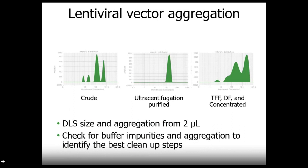Now, while we have specific applications for RNA-LNPs and adeno-associated viruses, Stunner will help you with other drug delivery systems as well. Here we can see measurements of a lentiviral vector at different steps in the process. The crude sample has some small impurities and large impurities or aggregation. Choosing ultracentrifugation as next step shows a nice and monodispersed lentiviral vector. Now, when the same crude sample goes through tangential flow filtration, diafiltration, and concentration steps, a lot more impurities and big aggregates are showing up for this specific sample. Stunner gives you size and aggregation, so you can check any step of your flow for buffer impurities and aggregation to identify the best formulations and cleanup steps.